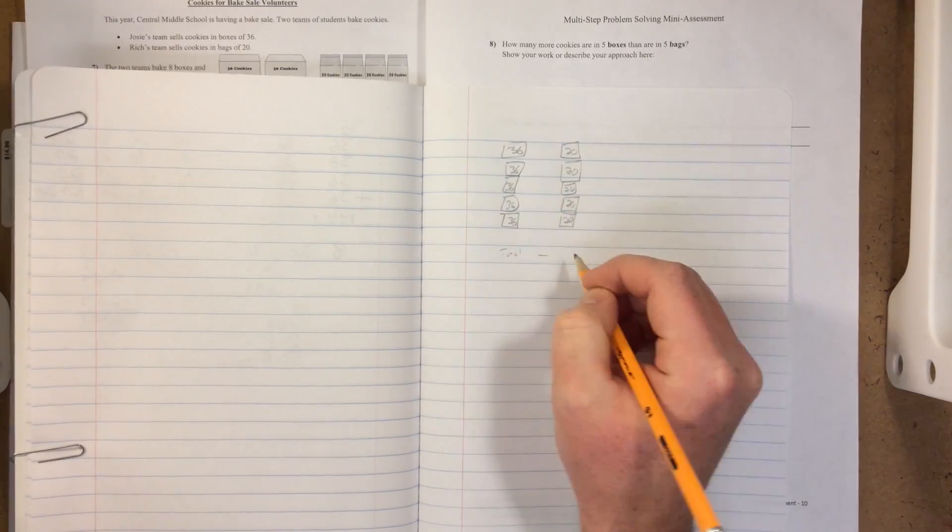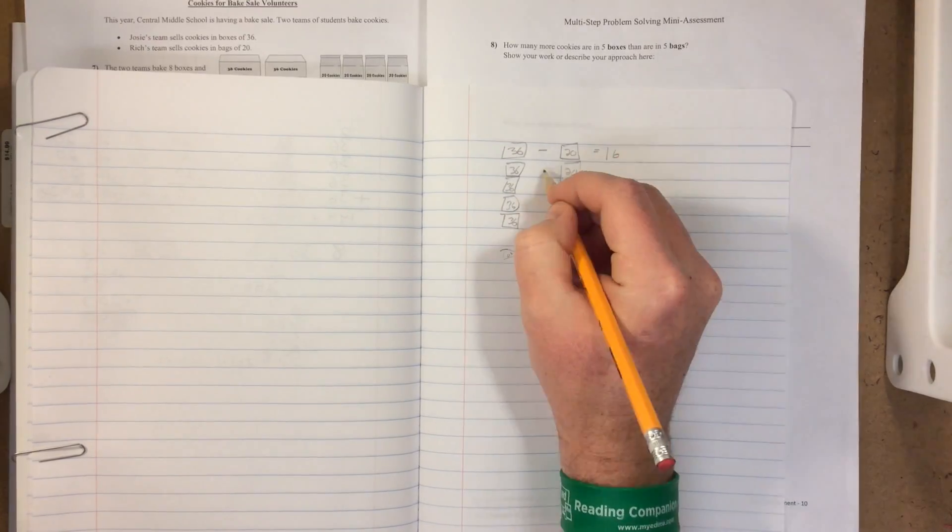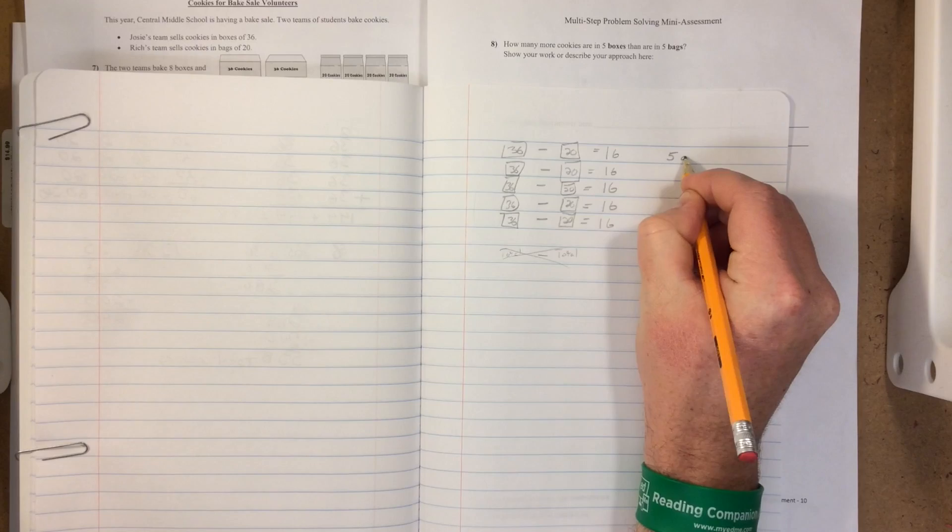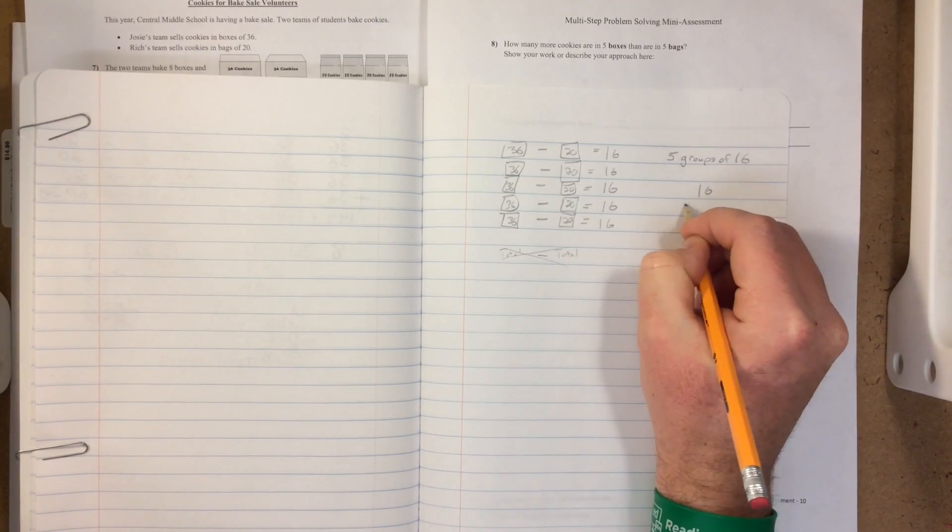It's simpler actually to look at the structure here. 36 minus 20 is 16, and 36 minus 20 equals 16 for all of these equations. That gives us the difference of 16 five times, 5 groups of 16.